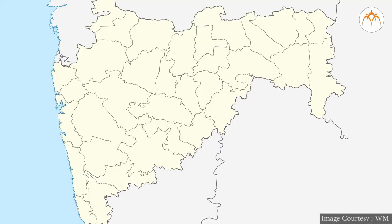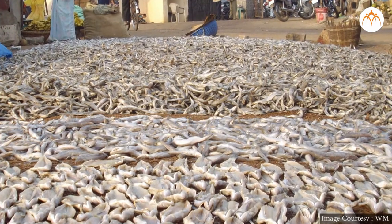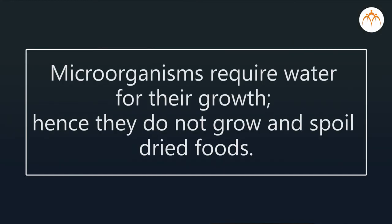In our country, drying food items in sunlight is a traditional method. You will also see in Kokan, fishes are sun dried. Sun drying is a quick process to reduce moisture and does not change food taste or quality. Also it is a very easy and cheap method.